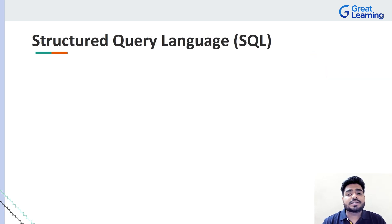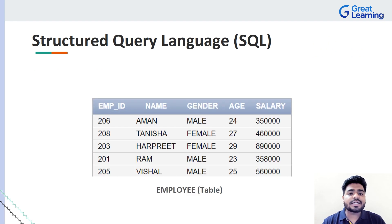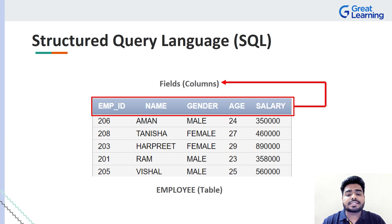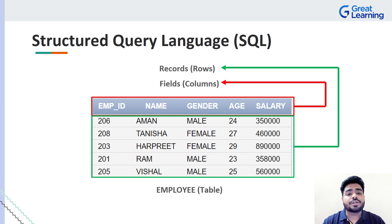In SQL, consider a table named 'employee' storing values like employee ID, name, gender, age, and salary. The columns are called fields, and the actual data values stored are called records or rows. These three terminologies — table, records, and fields — are very important in SQL. Remember them as we look at this table.